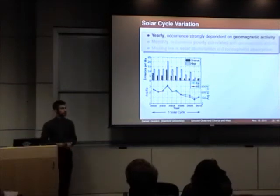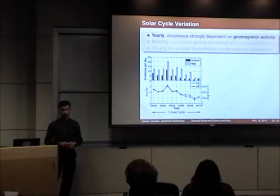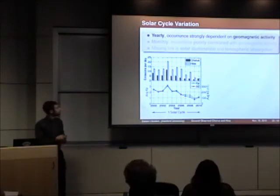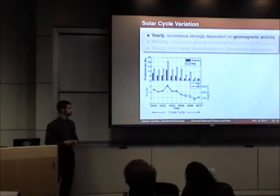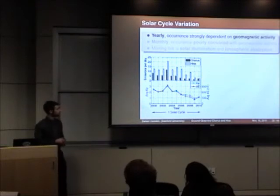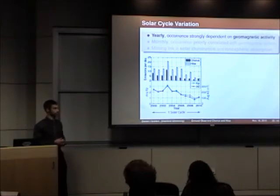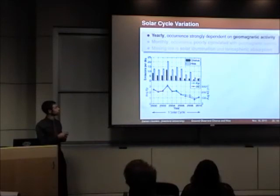We can also analyze the variation of chorus and hiss emissions over the course of a solar cycle's worth of data, about 11 years. Shown is a plot of emission occurrence of both chorus and hiss as a function of year, along with average KP and AE indices — proxy measurements of geomagnetic activity influenced by solar storms. On a yearly basis, chorus and hiss occurrence rate in emissions per day is strongly dependent on geomagnetic activity level. For example, in 2003, a maximum of geomagnetic activity corresponds to a maximum in chorus and hiss occurrence, while in 2009, a minimum in geomagnetic activity corresponds to a minimum in occurrence.